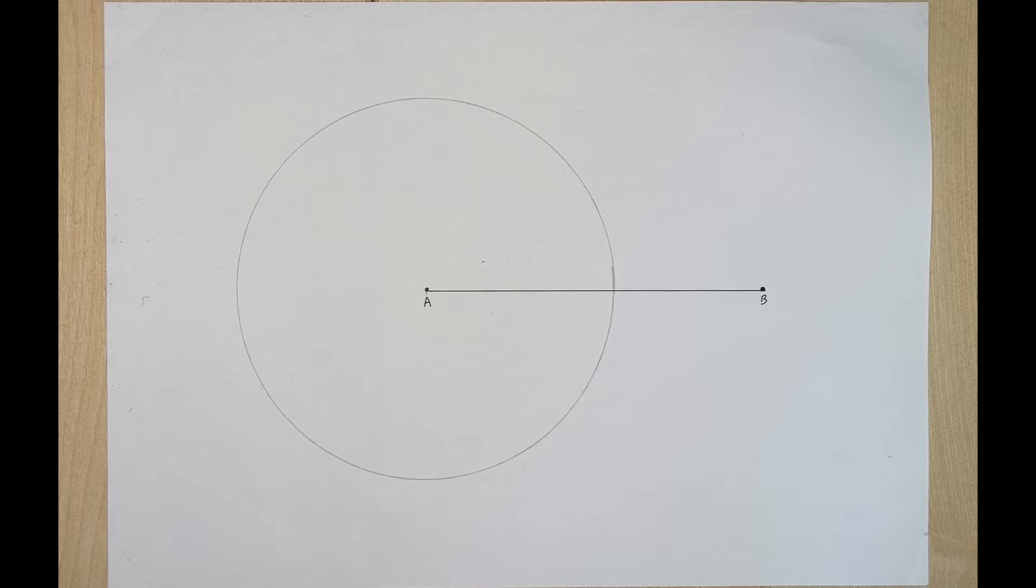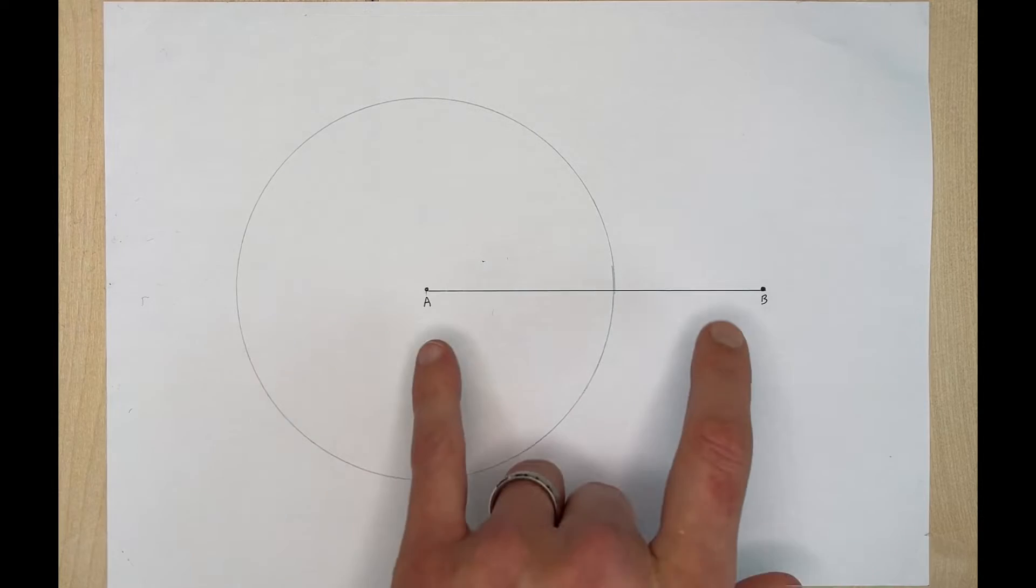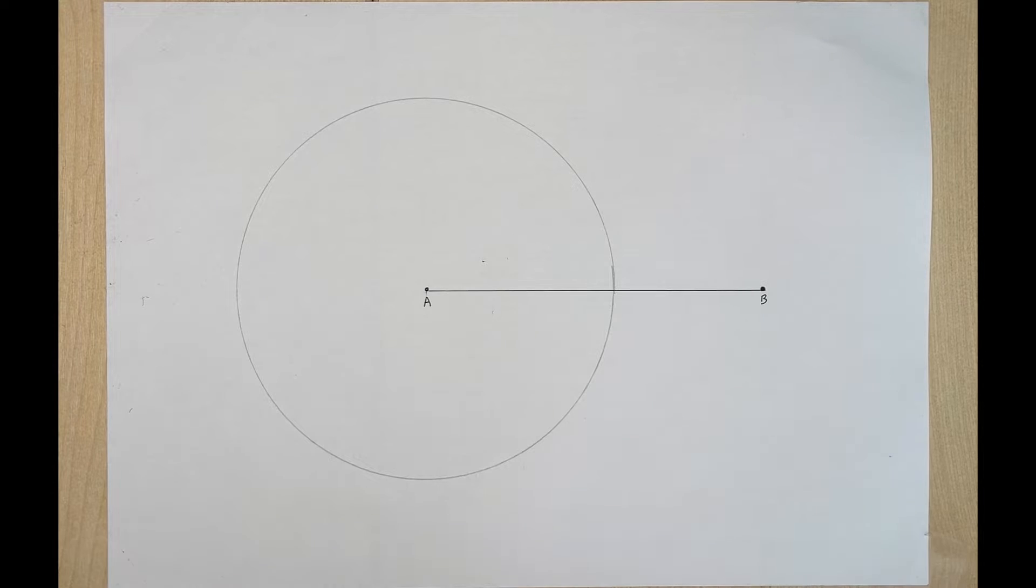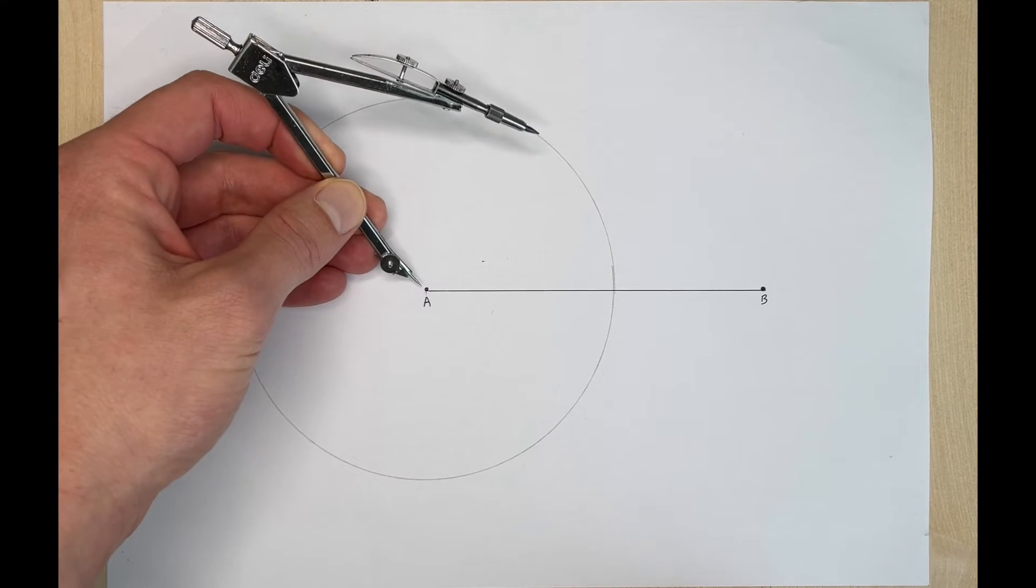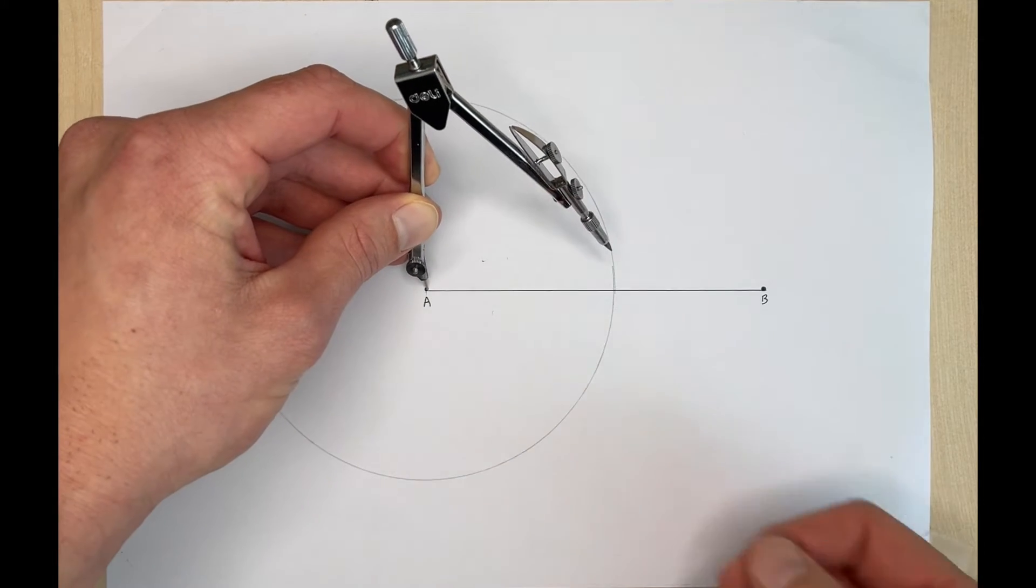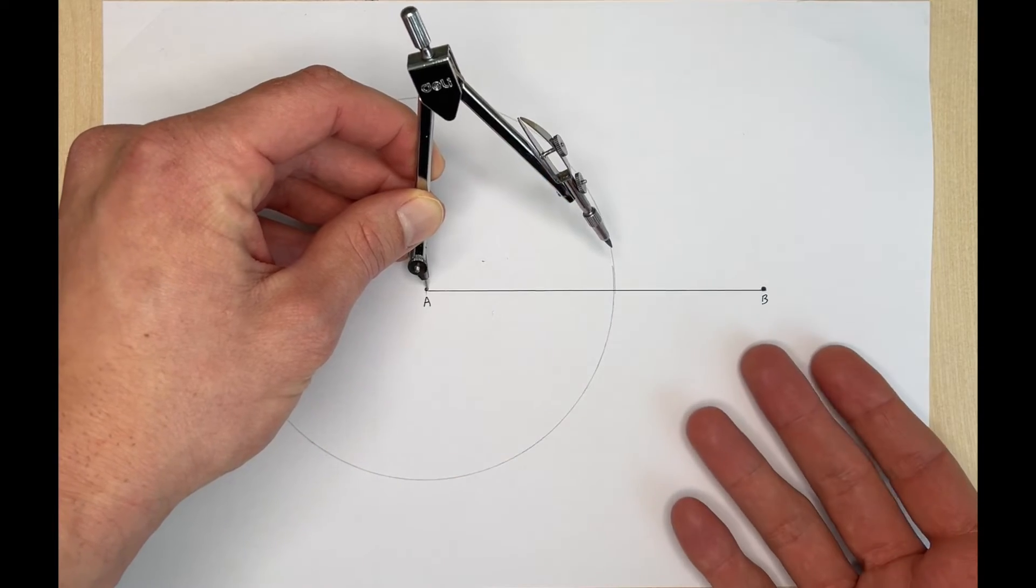Now what we're going to do is we're going to take our compass and we're going to find the midpoint of line segment AB. So to do that we're going to find some perpendicular bisectors and if we remember from previous construction videos we want to put the needle of our compass on A and we want our compass to be open at least half of the distance of AB.